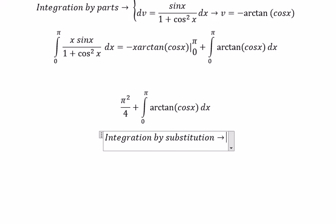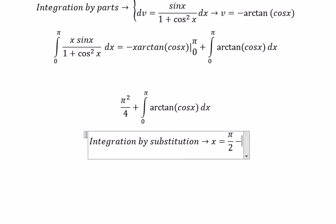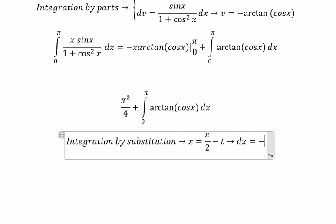We put x equal to π/2 - t, so we get dx equal to negative dt.